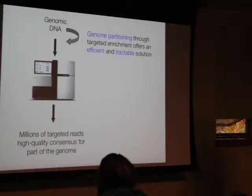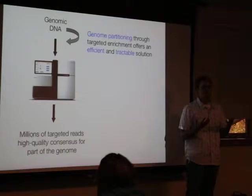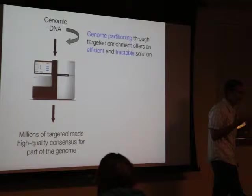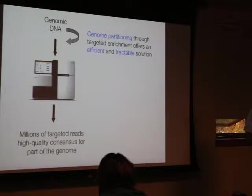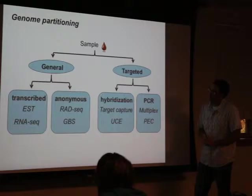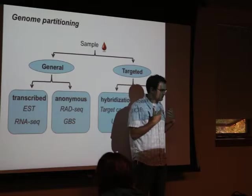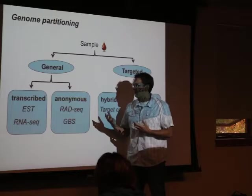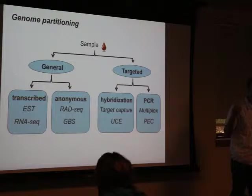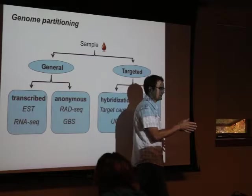You start with genomic DNA — Illumina generating millions of short sequencing reads, high error rates, hard to deal with. One solution is to partition the genome into subsets through some kind of enrichment approach, offering an efficient and tractable solution. You harness this massive throughput and generate high-quality consensus sequences for subsets. Nicely, this is doing what a lot of us were doing before genomics — dealing with loci at some level — just at a much larger scale.